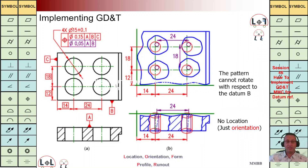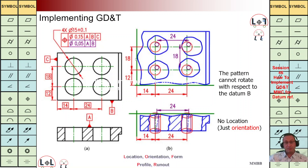Now let's consider the composite positioning control. These are not independent. Whenever we have this composite positioning control, the second line — the bottom line — we need to take care about orientation only. It should be perpendicular to A. We are going to have this cylinder with diameter of 0.05. With respect to B, it means it cannot rotate with respect to B, and we use this basic dimension. It can go left and right, up and down, but it cannot rotate.